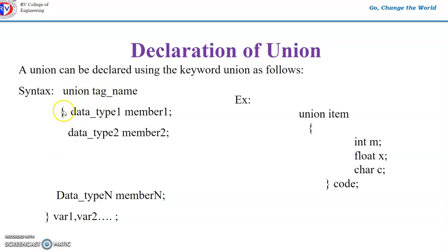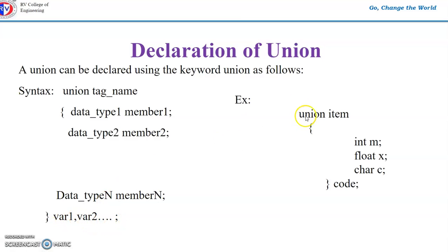The declaration syntax is: union tag_name, opening brace, data_type_1 member_1, data_type_2 member_2, and so on — you can have any number of data members. You can specify the variable list at the end of the declaration, or separately declare union variables. For example: union item { int m; float x; char c; }; and code is a variable of type union item.